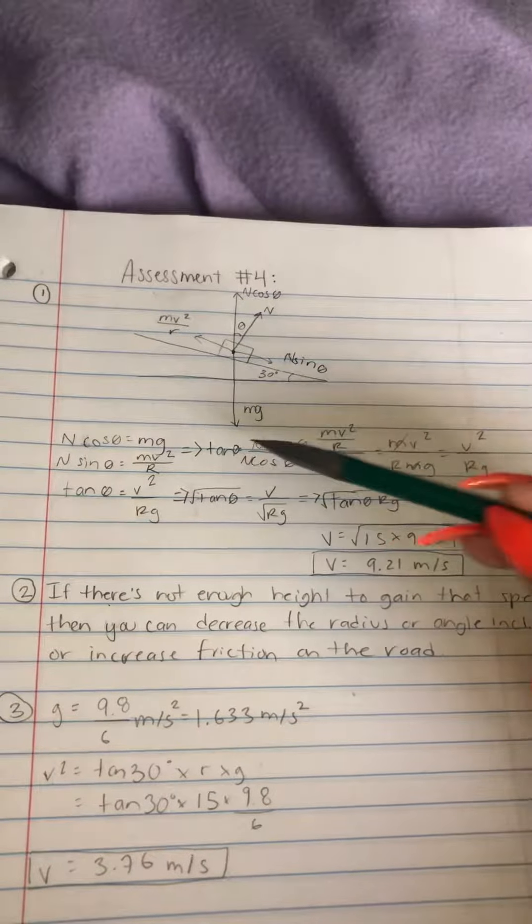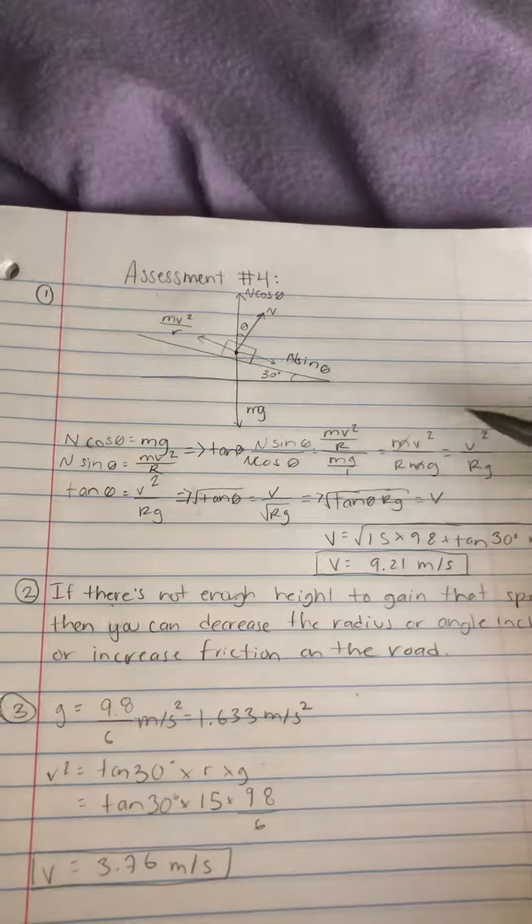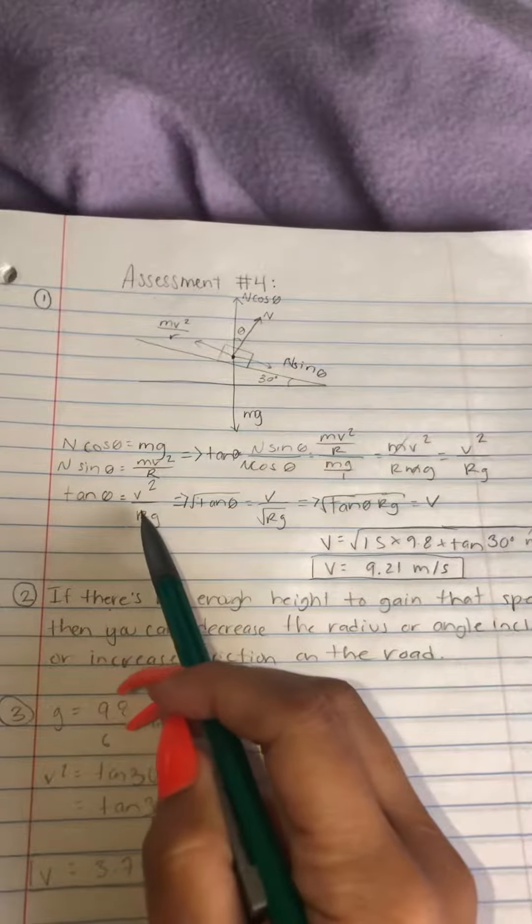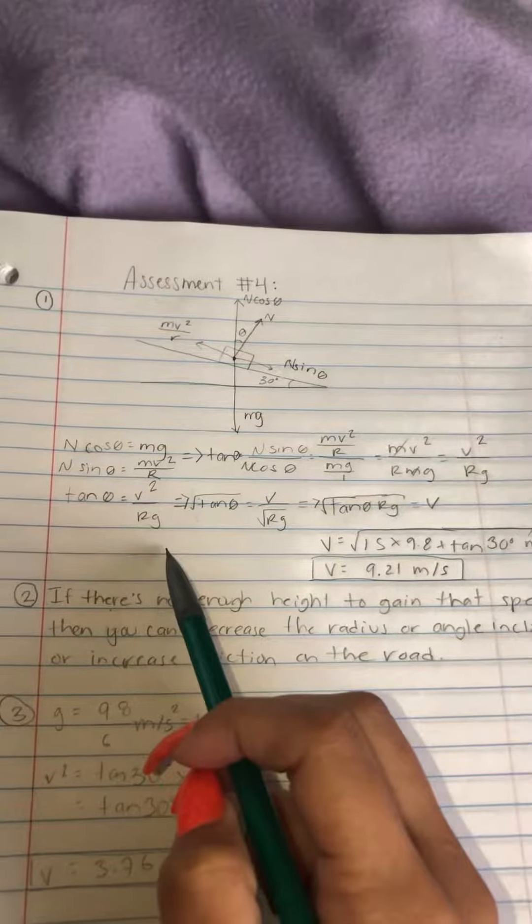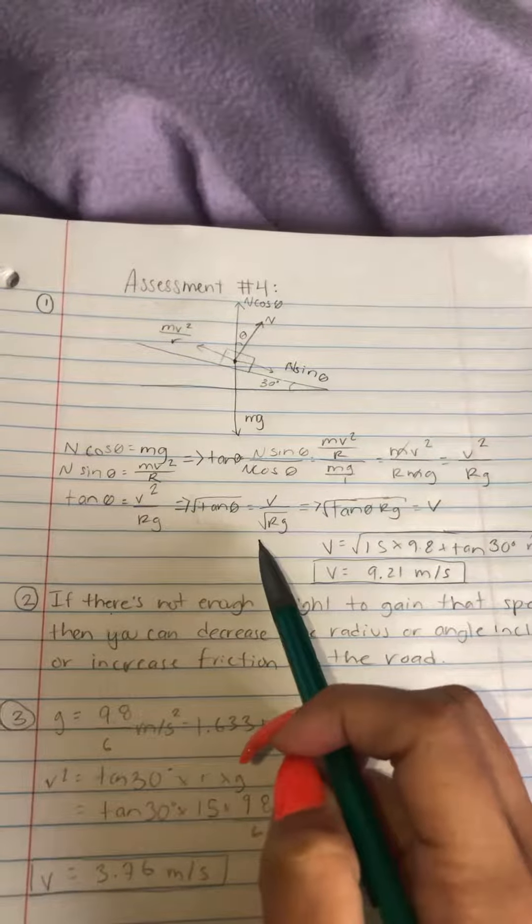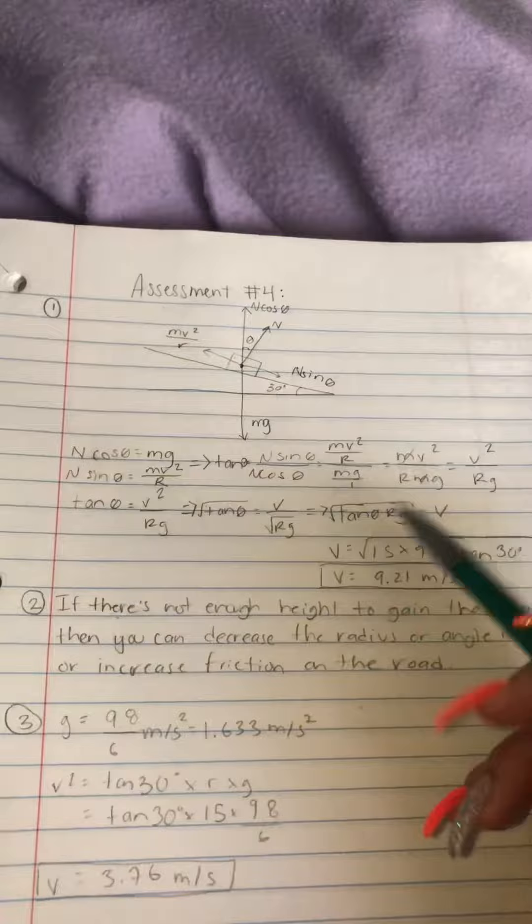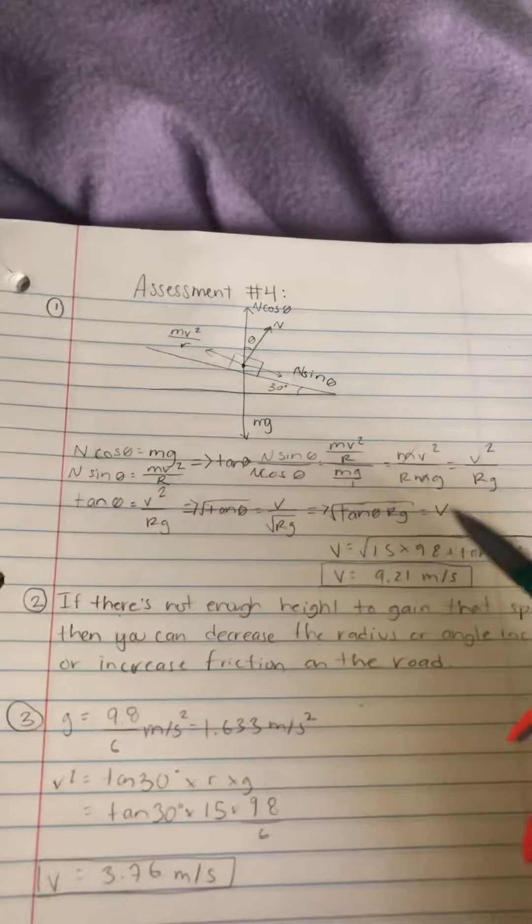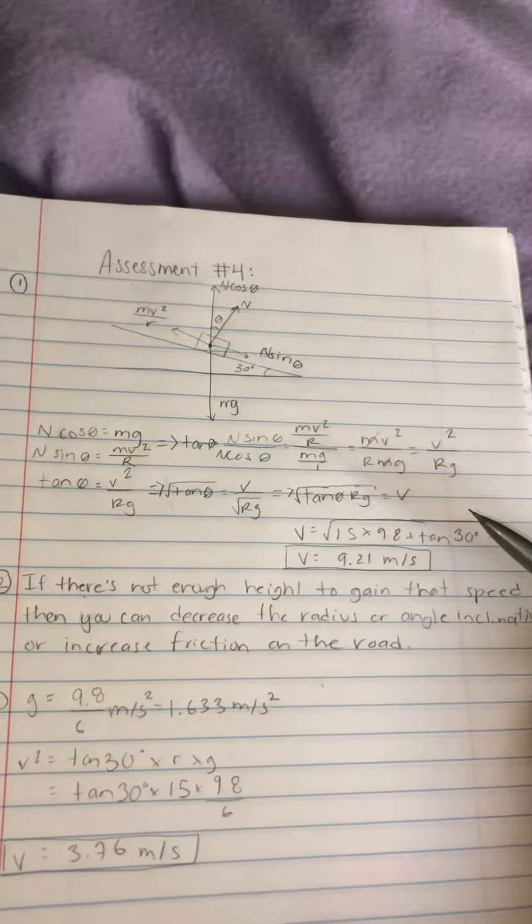So you would just use the formula and divide one by the other, cancel, and you get tangent theta equals v² over rg. And then you move velocity by itself and cancel out. So at the end, velocity is the square root of tangent theta times radius times gravity.